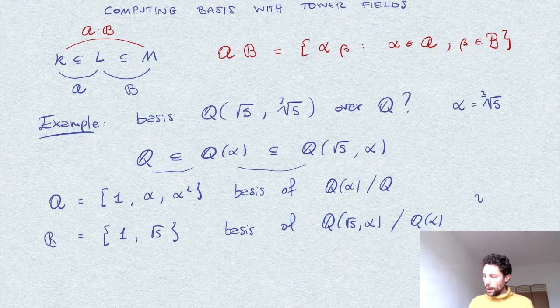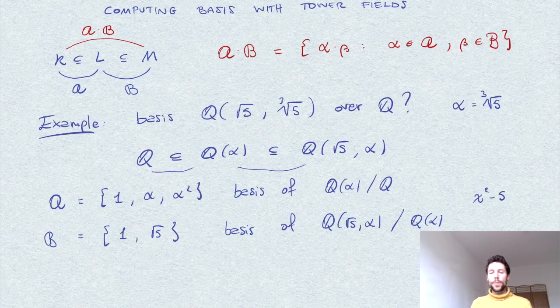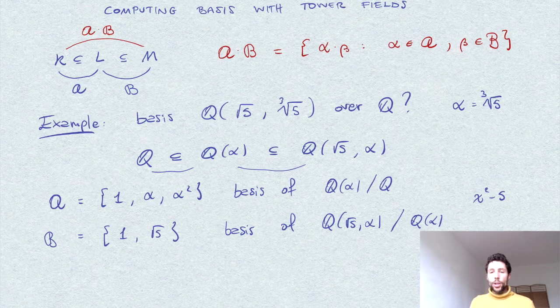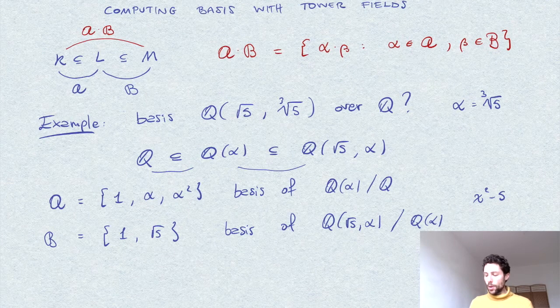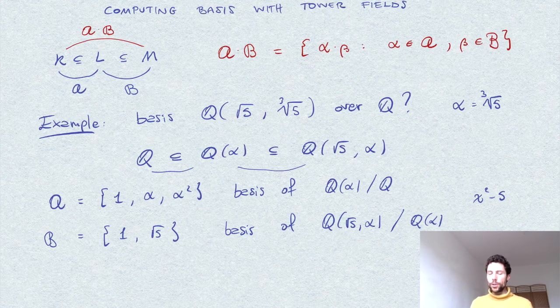You can consider the polynomial x square minus 5. As polynomial over Q is irreducible, but we notice that it remains irreducible over Q of alpha.